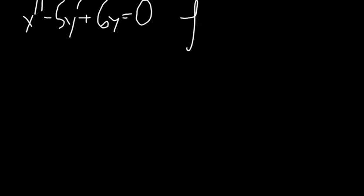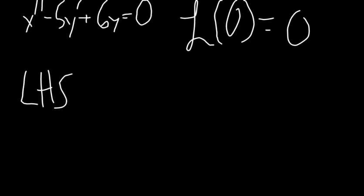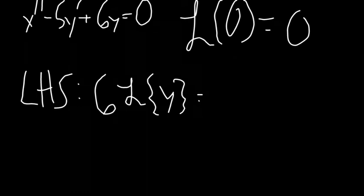To start off with we'll take the Laplace transform of the right hand side which equals 0. Now for the left hand side the easiest thing to do is take the Laplace transform of each individual part. So to start off with we'll take the Laplace transform of 6y which equals 6Y in the s domain.